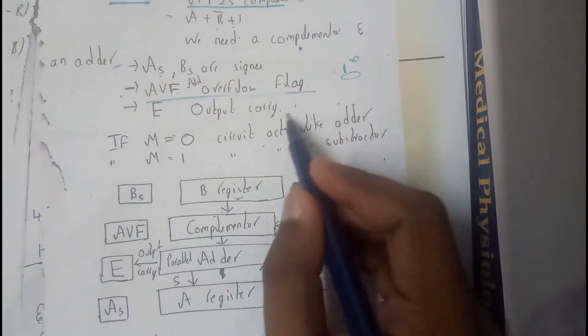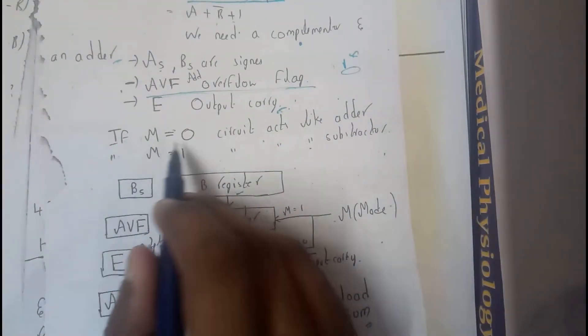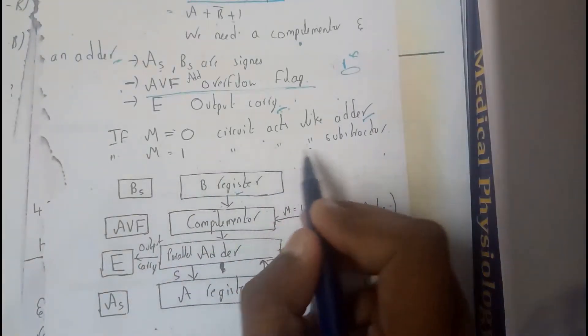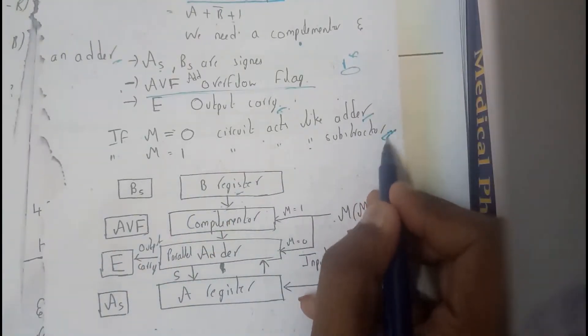E is output carry, and if M equal to 0, the circuit acts like adder, and if M equal to 1, the circuit acts as a subtractor.